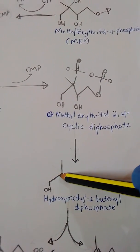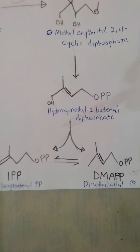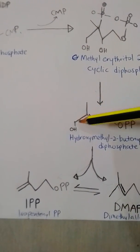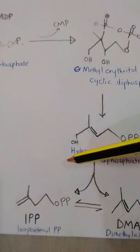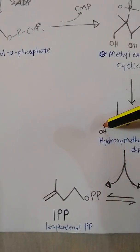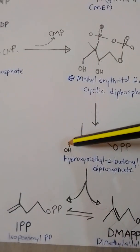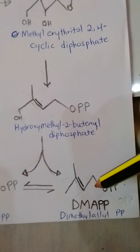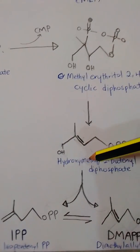This HMBPP also undergoes a reaction to yield the precursors for biosynthesis of terpenes — that is, IPP and DMAPP. Depending on the needs of the organism, it will produce either IPP or DMAPP. To produce IPP there is a dehydration reaction where the hydroxy group moves away and the double bond shifts to the terminal carbon. To form DMAPP there is also a dehydration reaction, but the hydroxy group is replaced by a hydrogen so the double bond is maintained to form DMAPP.